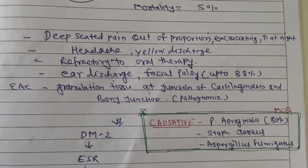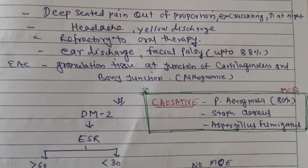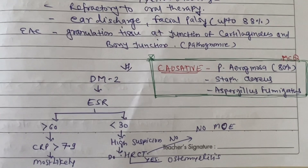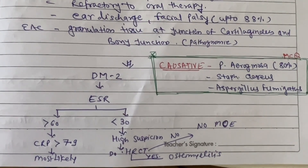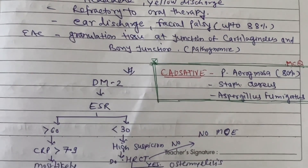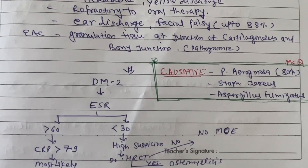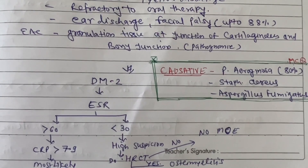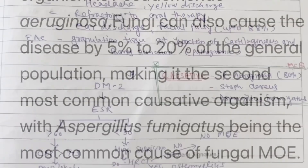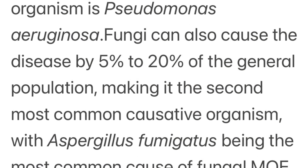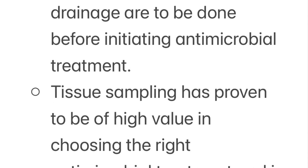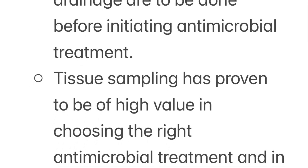There is deep-seated pain which increases at night, with yellow scanty discharge refractory to normal medications. Classically, granulation tissue is present at the bone-cartilage junction. The most common causative agent is Pseudomonas aeruginosa, followed by Aspergillus fumigatus, then Staphylococcus aureus. Fungal infections account for 5 to 20% of cases, with Aspergillus fumigatus being the most common fungal pathogen.